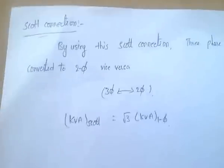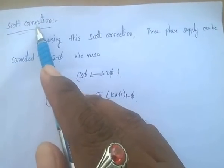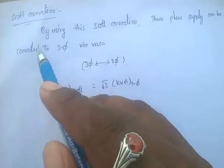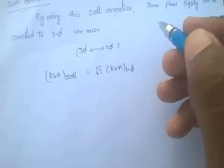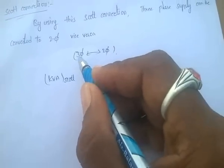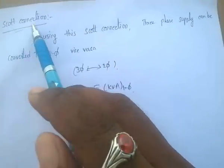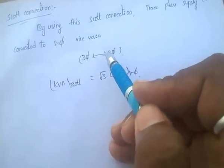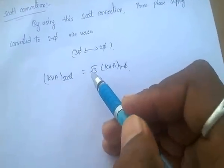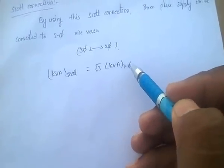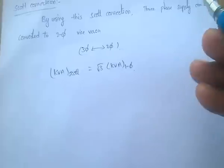The Scott connection is used to convert three-phase supply to two-phase supply, and two-phase supply to three-phase supply. This is very important for competitive exams. The KVA of the Scott connection equals √3 × KVA of a single-phase transformer.